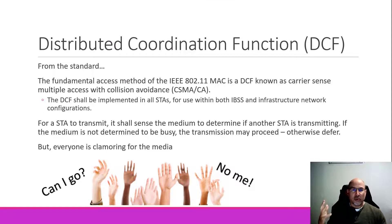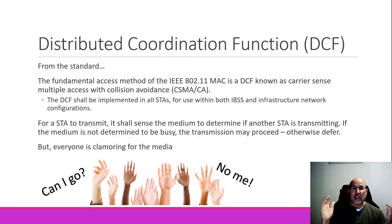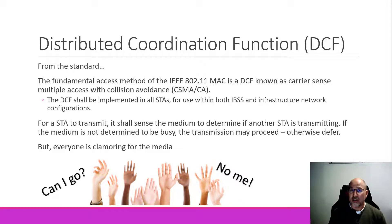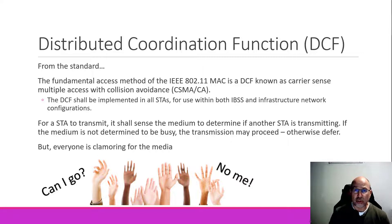We're talking about the distributed coordination function, or the DCF. The access point is done with the PCF — done with the contention-free period — and now we're going to send data. It is the fundamental access method, the thing that all nodes do. It's called carrier sense multiple access with collision avoidance, implemented on all stations. It doesn't matter if you're in an independent or ad hoc network, or using an access point in a basic service set — everybody does the distributed coordination function.